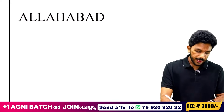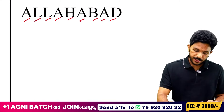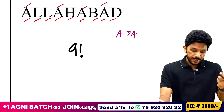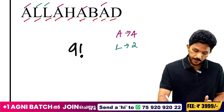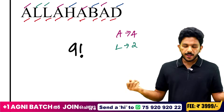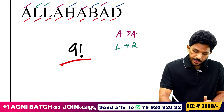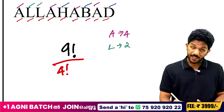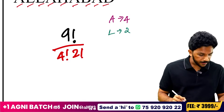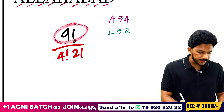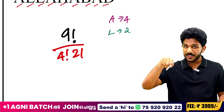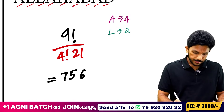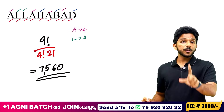We have 9 letters in ALLAHABAD. Obviously 9!; A appears 4 times, L appears 2 times. So the formula is 9! divided by (4! × 2!). Dividing: the answer is 7,560. Calculate it — 7,560.